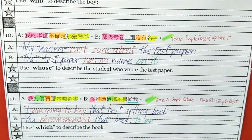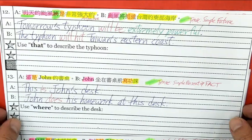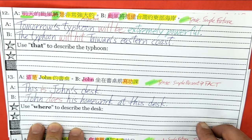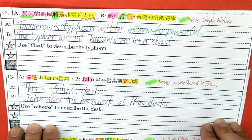Eleven. A: I am going to buy that best-selling book. B: You recommended that book to me. Twelve. A: Tomorrow's typhoon will be extremely powerful. B: The typhoon will hit Taiwan's eastern coast. Thirteen. A: This is John's desk. B: John does his homework at this desk. Very good.